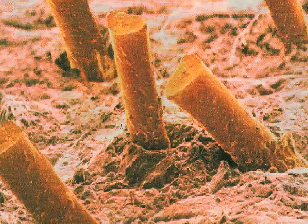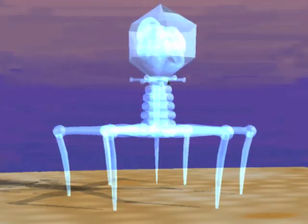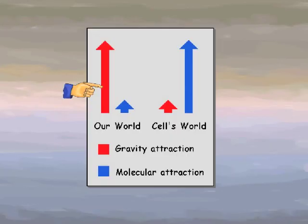To put this in the proper perspective, here I am next to a human hair. In the nano world, there is no light and everything is colorless. In this presentation, we will add lights and colors for clarification. The laws of physics as we know them do not apply in the nano world. For example, the gravity in our world has little effect in the nano world.